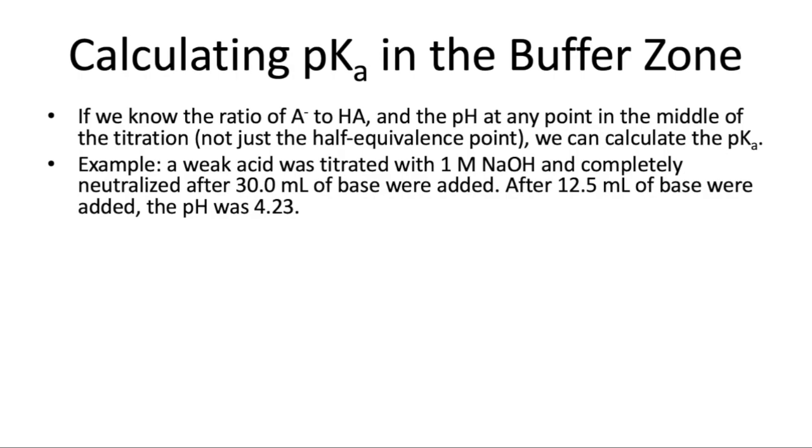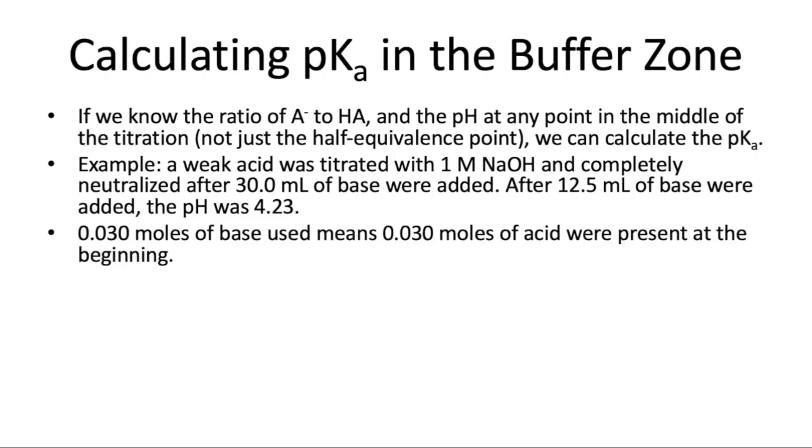So let's walk through an example. If we have a weak acid that was titrated with one molar NaOH, and it was completely neutralized after 30 milliliters of base were added, and then in the middle of the titration, after about 12.5 milliliters of base were added, we did measure the pH, and it was 4.23. This is like the data that you'll have in your experiment for part three. Essentially, if we've added 30 mL of base, then we know that there were 0.03 moles of base, and we had 0.03 moles of acid. This is a monoprotic acid, and we're using sodium hydroxide.